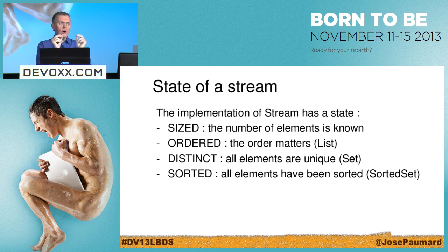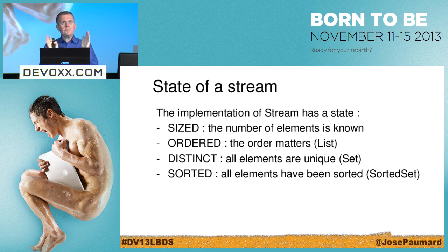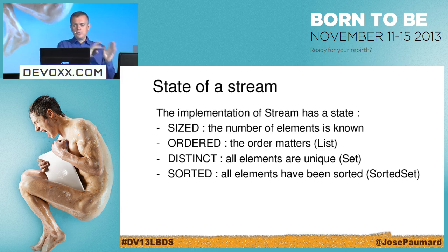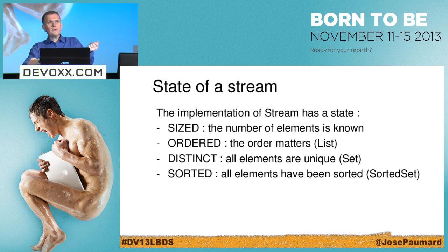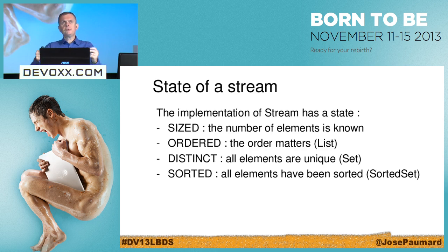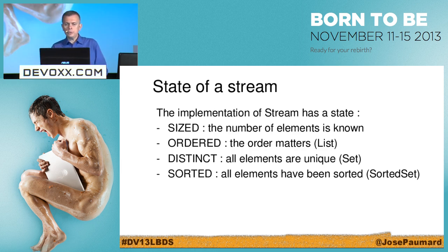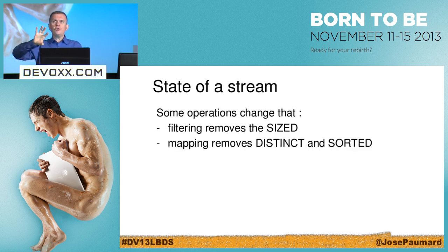'Ordered' means the order matters — it is not the same as 'sorted', which means the elements have been sorted. A list is ordered in the sense that each element has an index: a first, second, tenth element, and so on. The order notion is defined in List, not in Collection. So if I build a stream on a list, the stream will be ordered. If I build a stream on a set, the stream is 'distinct' — another flag. And 'sorted' means all elements have been sorted, which is the case if I build a stream on a SortedSet.